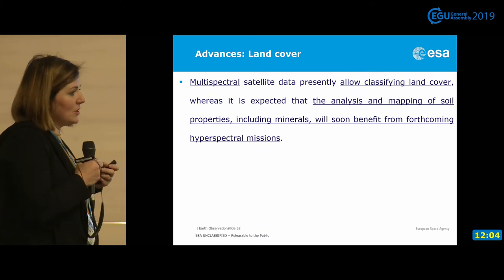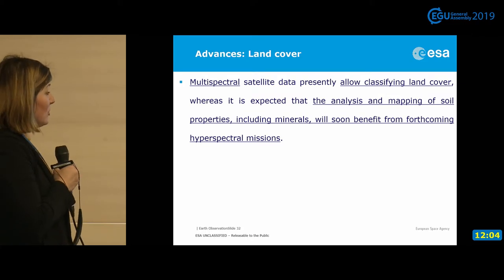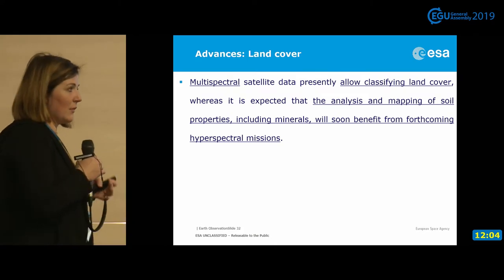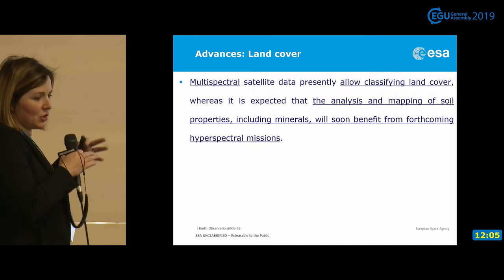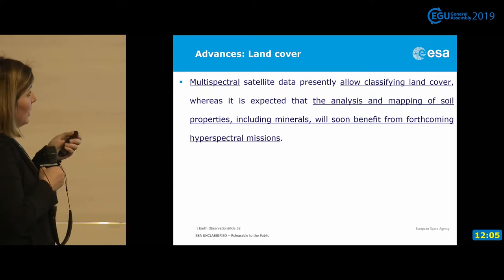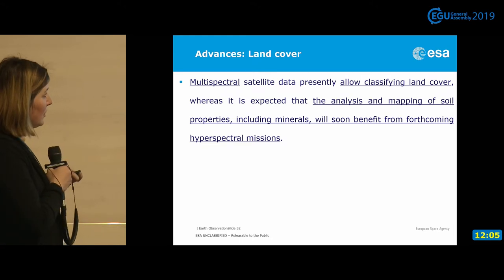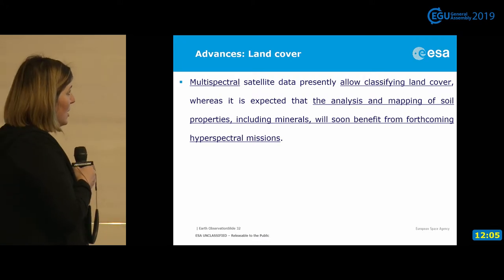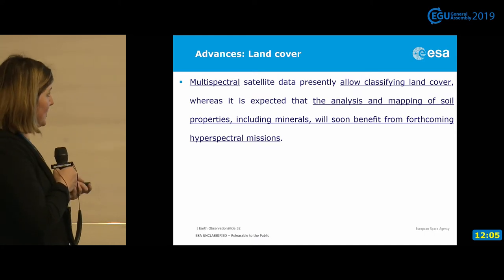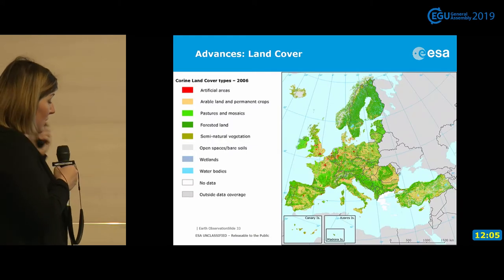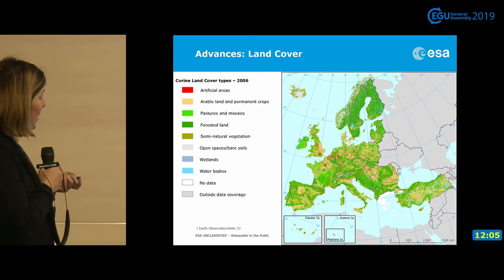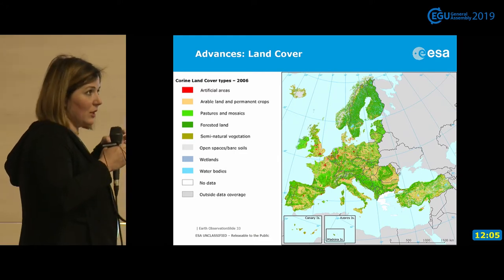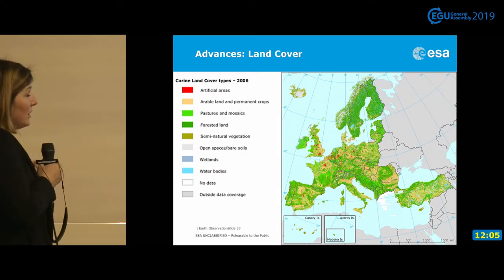For geological sciences, what we see on the ground also matters. Different land covers are related to different soil types, which are related to geological structures on the ground. We can use optical data to classify land cover and map soil properties, including minerals — which will happen soon with new hyperspectral missions coming in the next years. This can be done globally, not just locally.